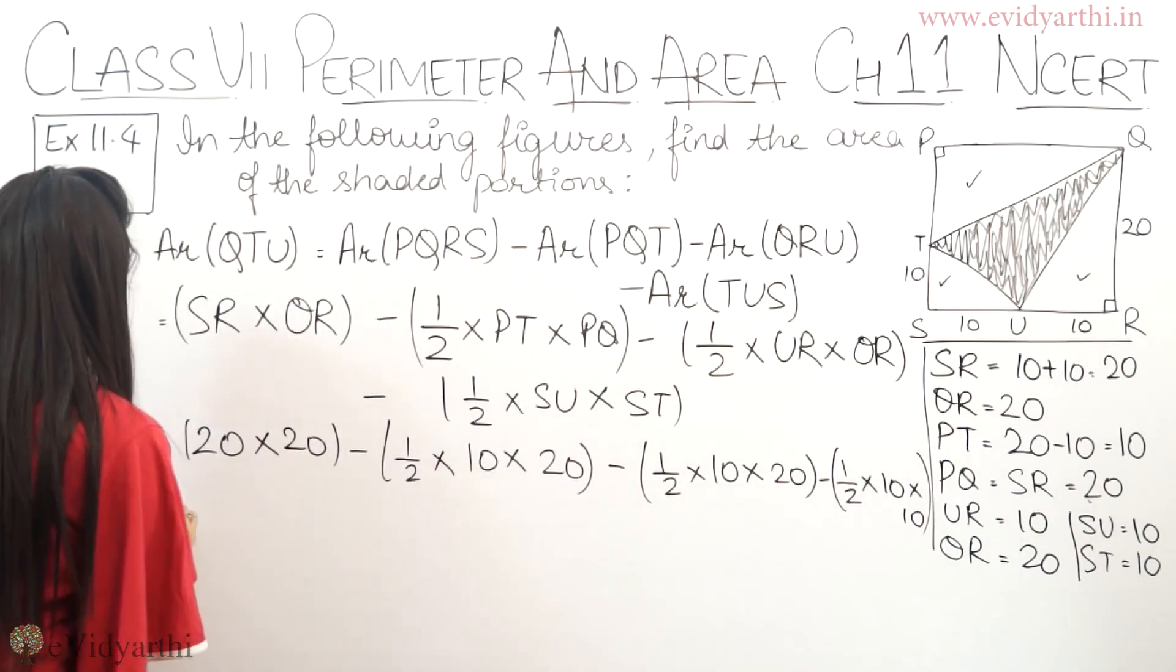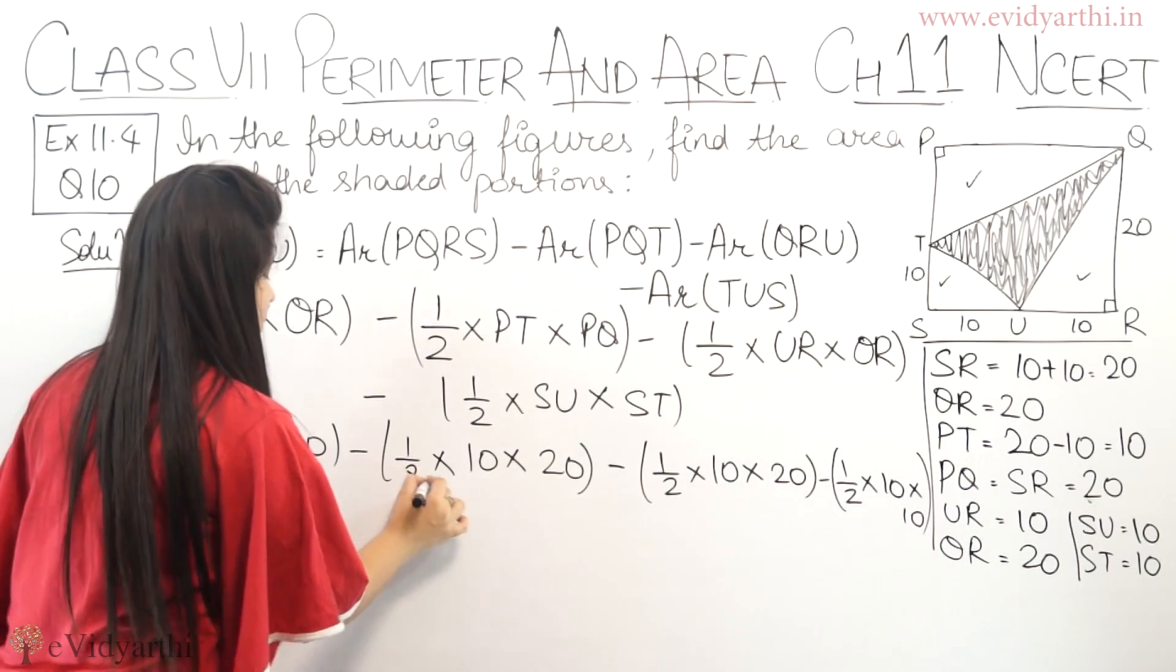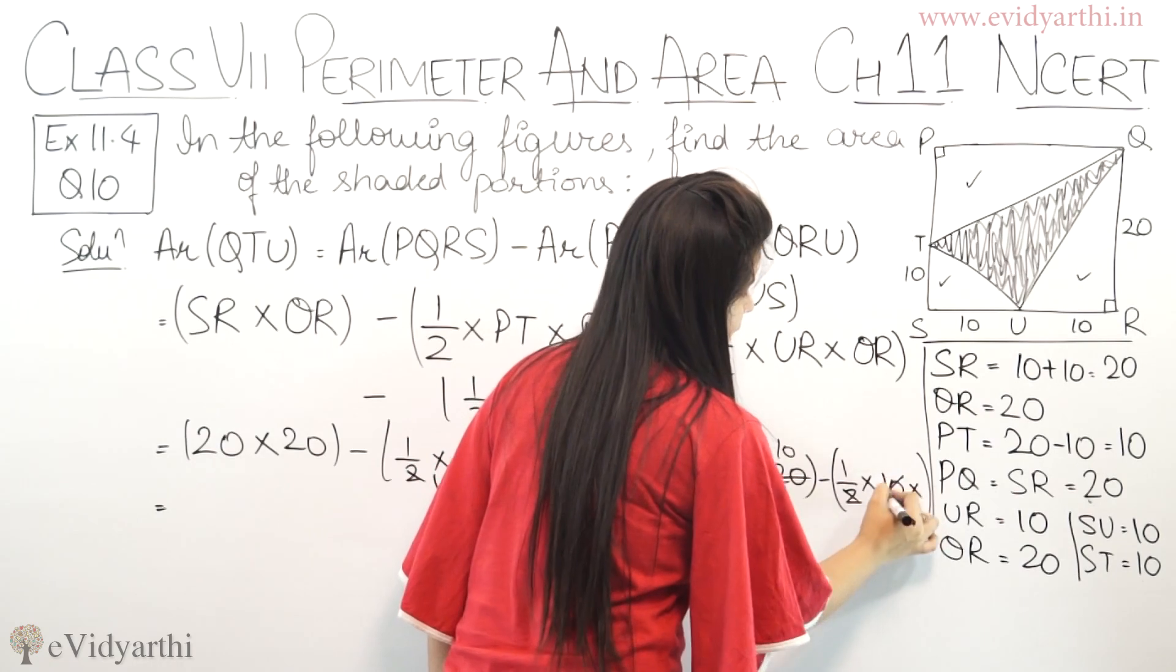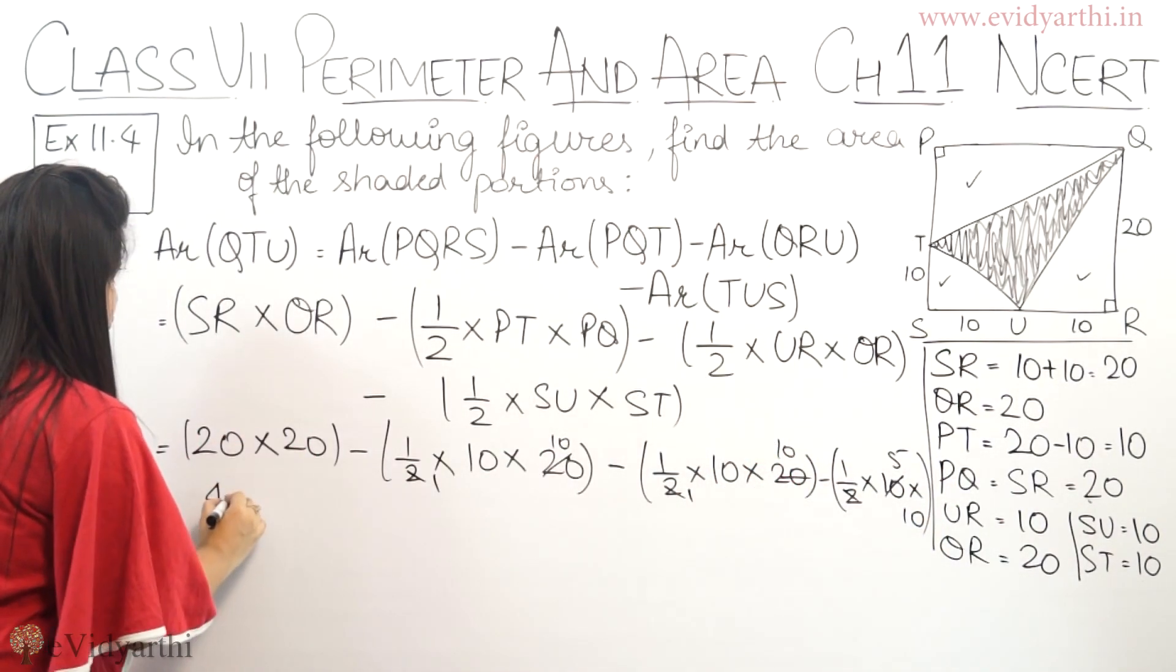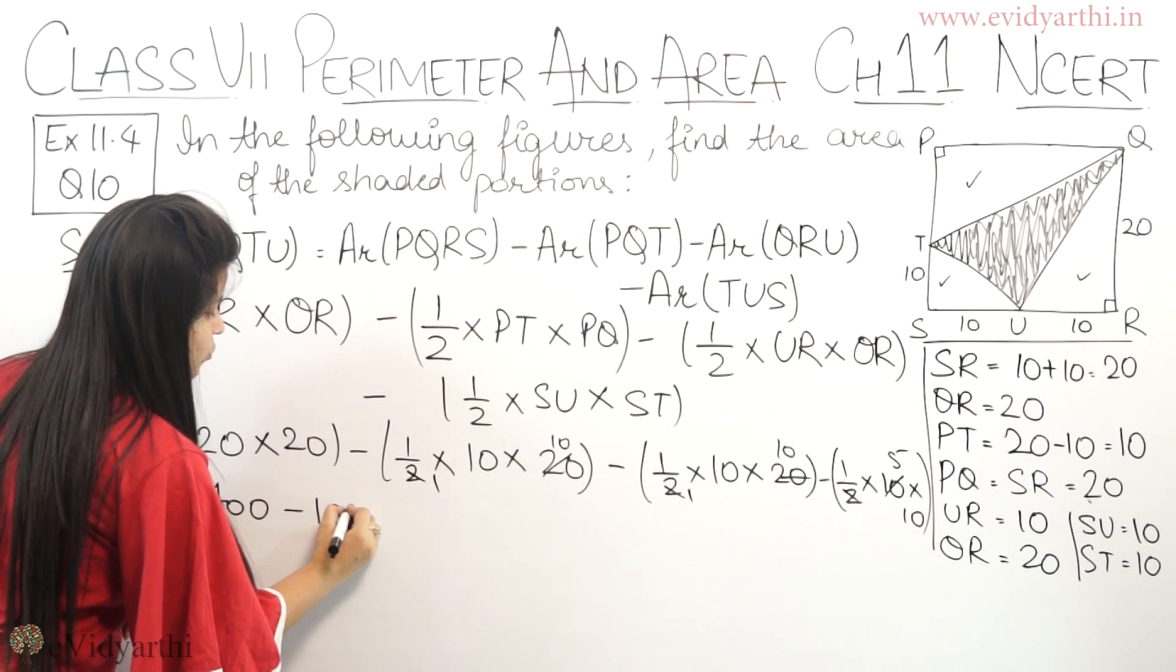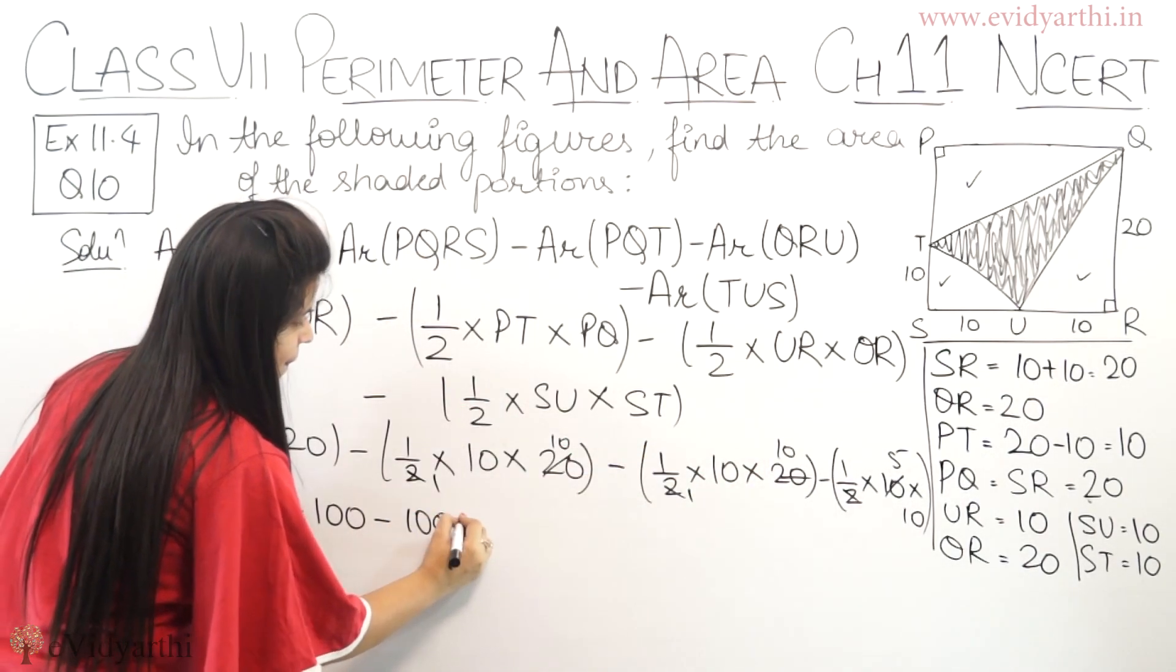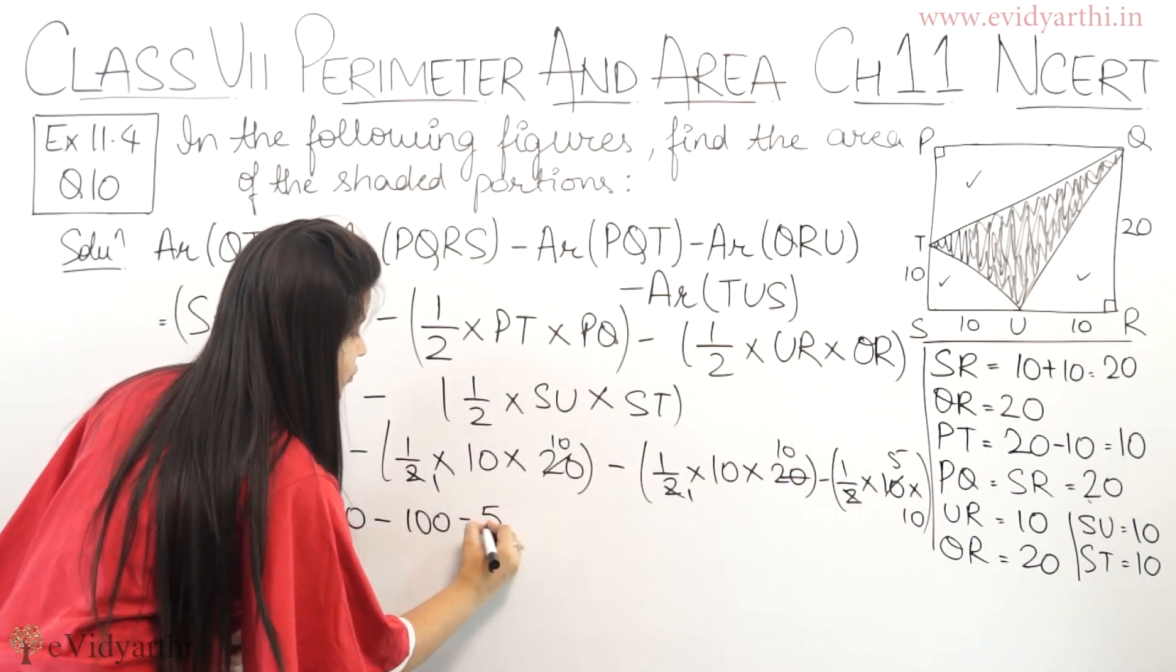Now let's cancel where we can. This becomes 10, this becomes 10, and this becomes 5. So 2 into 2 is 4 with two zeros, that's 400. Minus 10 into 10 which is 100, minus 10 into 10 is 100 again, minus 5 into 10 which is 50.